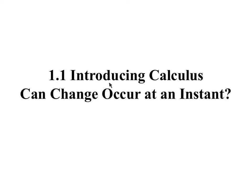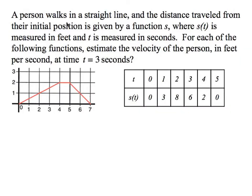Section 1.1, Introducing Calculus. Can change occur at an instant? A person walks in a straight line, and the distance traveled from their initial position is given by a function s, where s(t) is measured in feet and t is measured in seconds. For each of the following functions, estimate the velocity of the person, in feet per second, at time t equals 3 seconds.